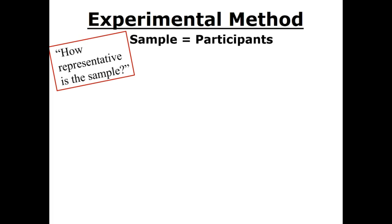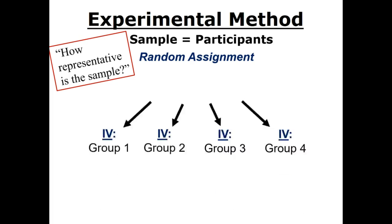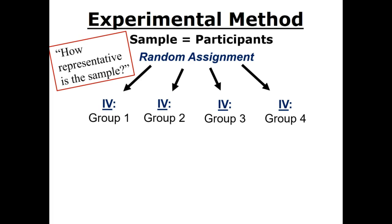Since we are talking about a true experiment, there will be different groups. But which participants will be in each group? In order to avoid bias, researchers use a random method. It is important to note that while random sampling is not always possible, random assignment of participants to groups is an essential part of every true experiment. Each participant is randomly assigned to a group, meaning each individual in the sample has an equal chance of being placed in each of the groups.